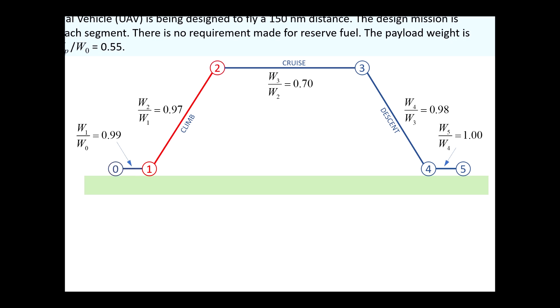The next segment from node 1 to 2 represents climb to cruise altitude. This is followed by segment from node 2 to 3 that represents cruise, and so on.